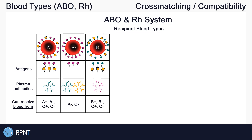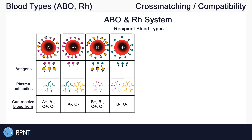Someone with B positive blood has B antigens, Rh antigens, and A antibodies. They can receive blood from anyone without A antigens, which includes B positive, B negative, O positive, and O negative. Someone with B negative blood has B antigens, Rh antibodies, and A antibodies. They can receive blood from anyone without Rh and A antigens, which includes B negative and O negative.